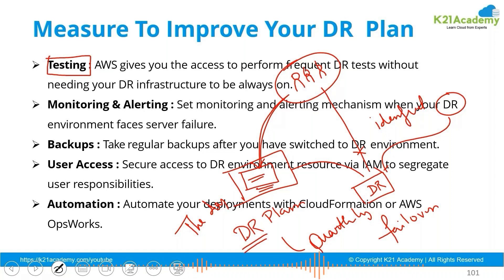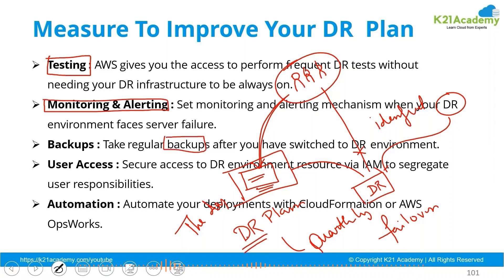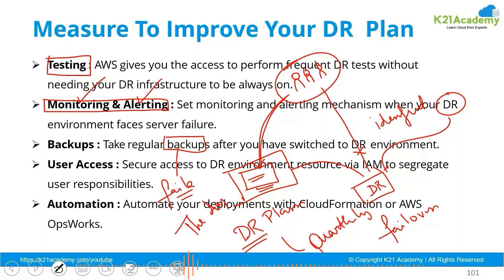There should be proper monitoring and alerting. If any backups are running and they fail for any reason, you should get an alert. If a DR is being raised, the network team should also be alerted that DR has been activated. Regular backups should be taken and monitored, and failover and fallback should happen automatically in case of a DR situation.